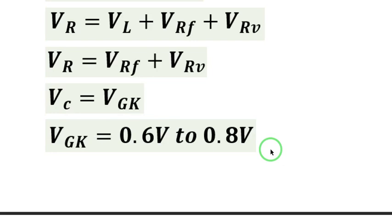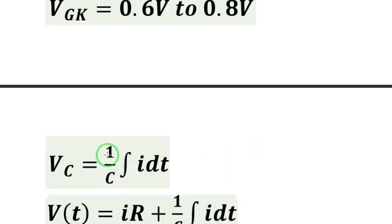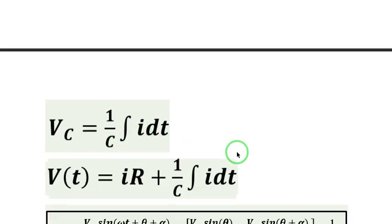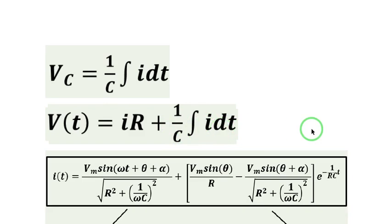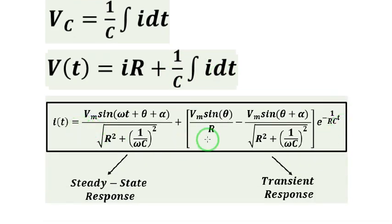V sum C is equal to 1 over C, the integral of I dt. V(t), which is V sum R plus V sum C, equals IR plus 1 over C the integral of I dt. I(t) is given by this equation since we are dealing with an RC in an AC source.